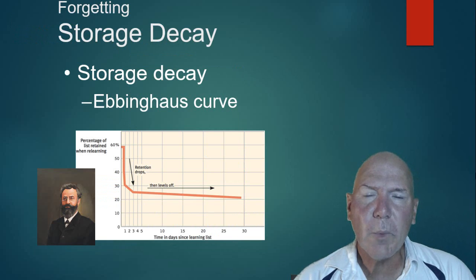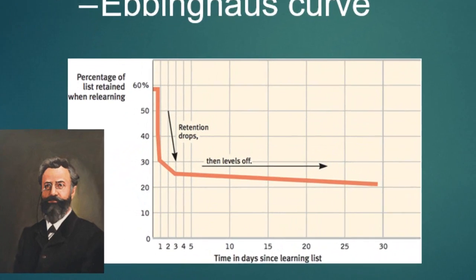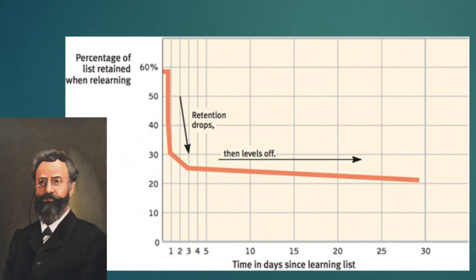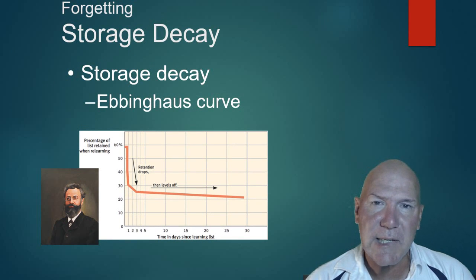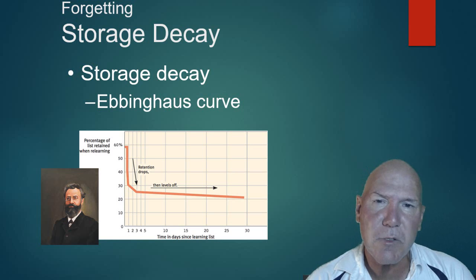Once we've stored information, it seems to decay. Ebbinghaus looked at his nonsense syllables again and found that people remember a majority of them on the first day, but it drops significantly after that. It then levels out — after 30 days it's almost the same amount remembered as after 10 days or even 3 days. When we recall events from our life, decayed storage means our brain has to fill in those missing parts, which leads to memory errors.